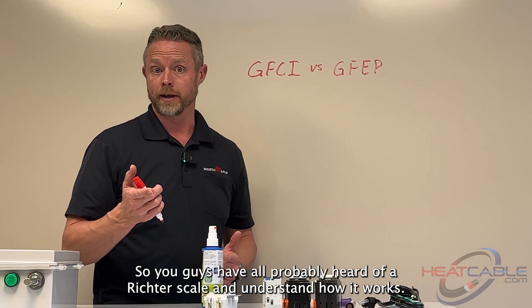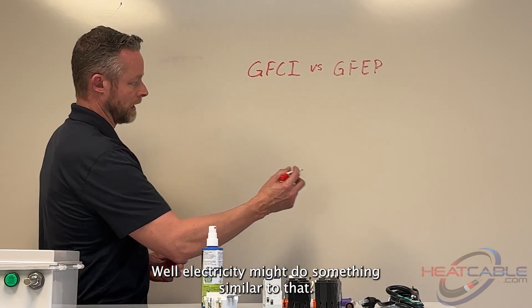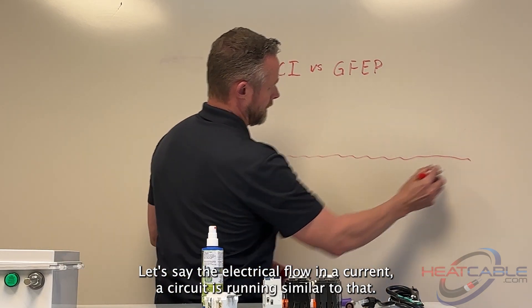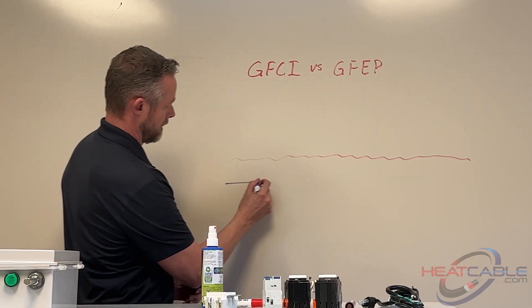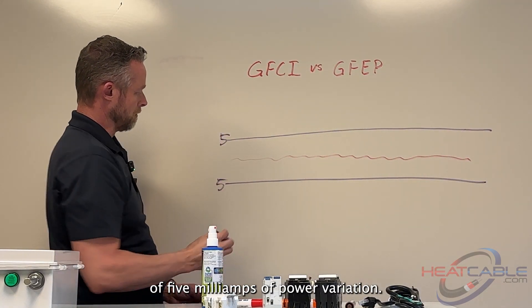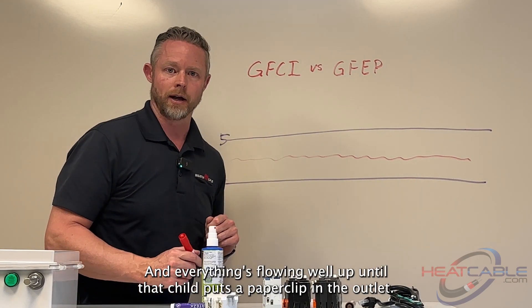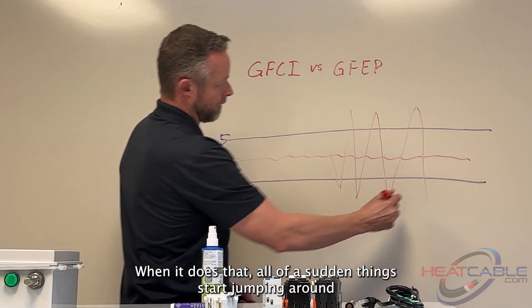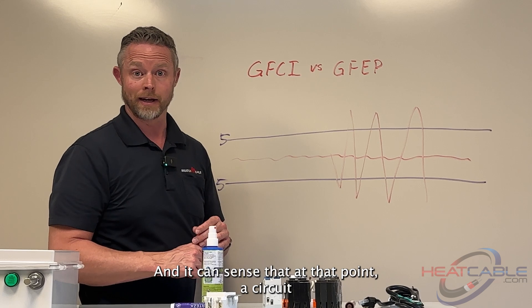You've probably heard of a Richter scale and understand how it works — it measures earthquakes and the variance in vibration. Electricity does something similar. The electrical flow in a circuit runs similarly. We have a boundary of five milliamps of power variation. Everything flows well up until that child puts a paper clip in the outlet. When it does that, all of a sudden things start jumping around and leave this boundary point because the electricity in the circuit is exiting the circuit, and the breaker can sense that.